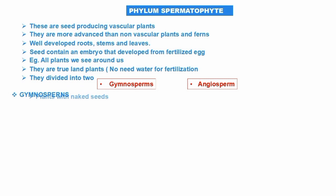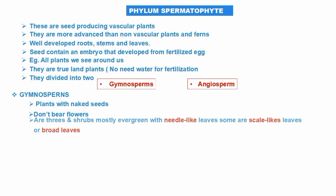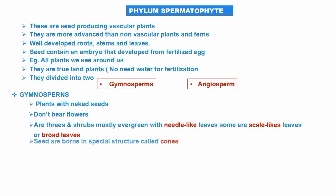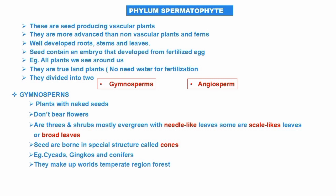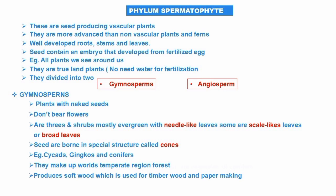Gymnosperms are plants with naked seeds — they do not bear flowers. They are mostly trees and shrubs, mostly evergreen, with needle-like, scale-like, or broad leaves. Seeds are borne in special structures called cones. Examples include cycads, ginkgoids, and conifers. Conifers make up the world's temperate region forests and produce soft wood used for timber and paper-making, and also yield resin used in paint and varnish.